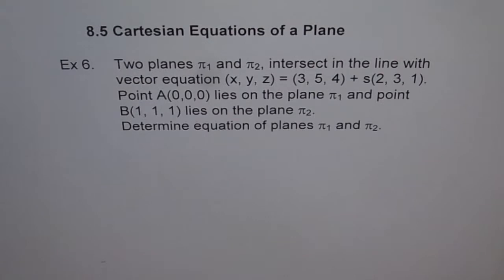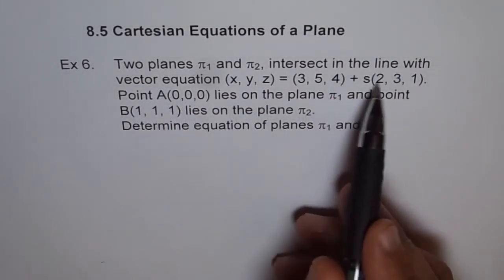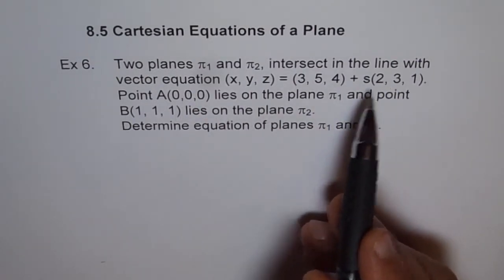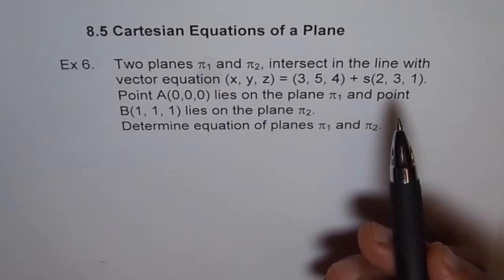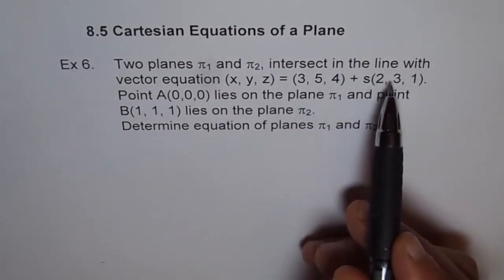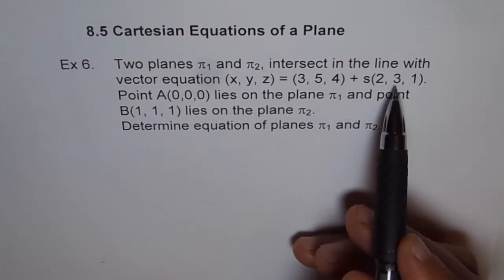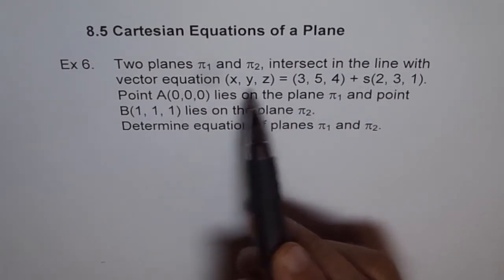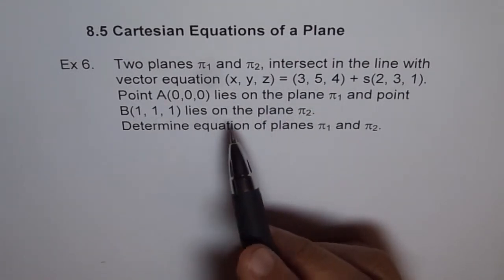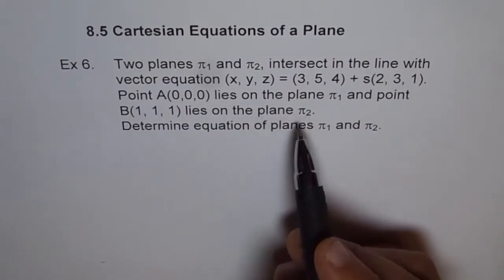Well, you should see it like this: the line is common to both planes. So you have a line and a point not lying on the line, so you can always find the equation of a plane. Both these planes, π₁ and π₂, contain the line. So once we do that, then we can find the equation of the plane.